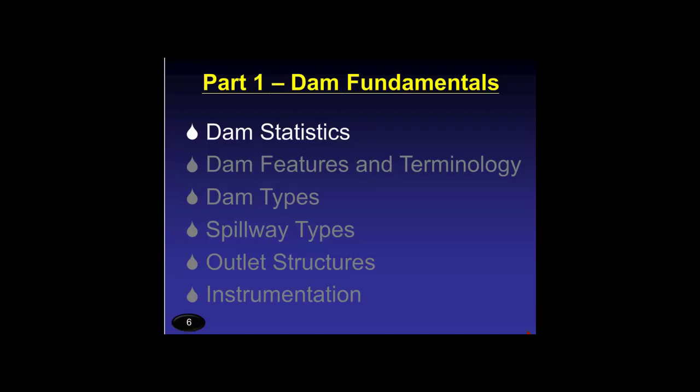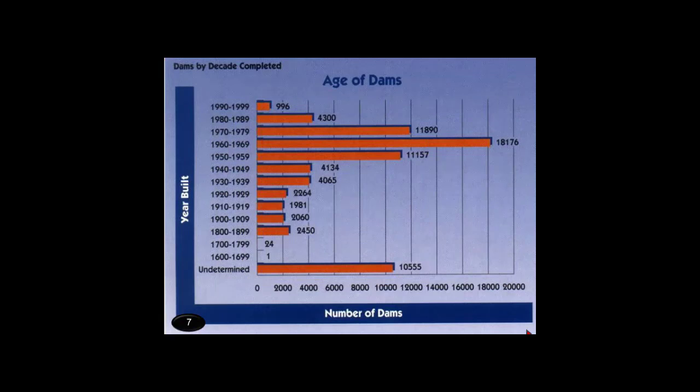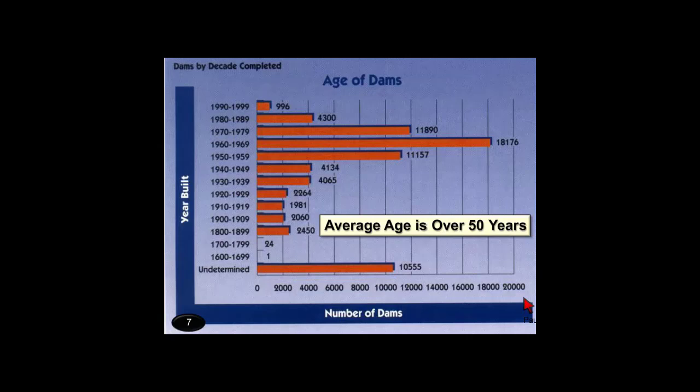Let's start with some dam statistics. A graph shows the number of dams built by decade. Most dams in the United States are now over 50 years old. The peak of the dam-building era was between 1960 and 1969 — during that peak period, over 600 dams per year were being built.